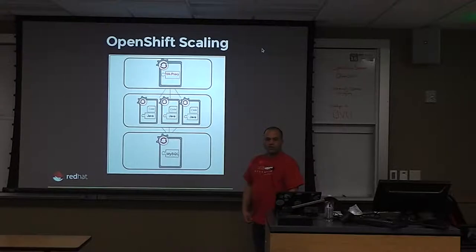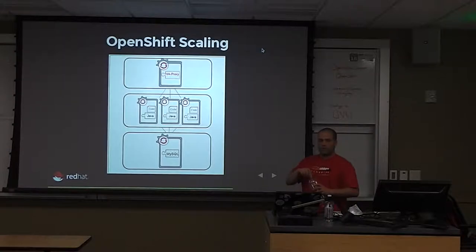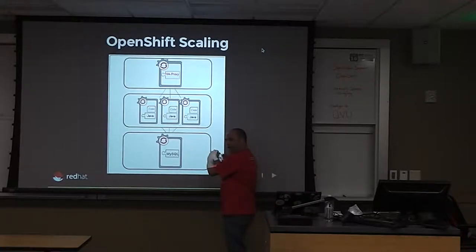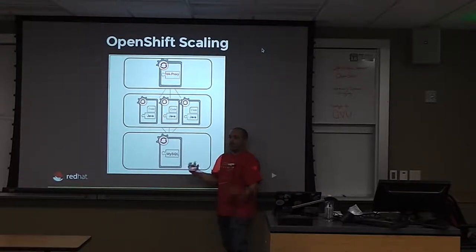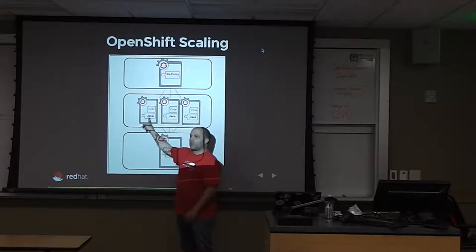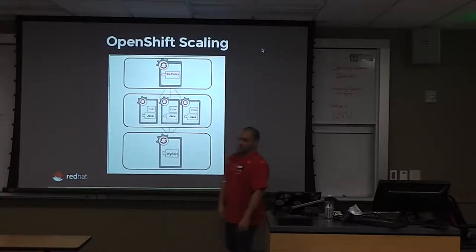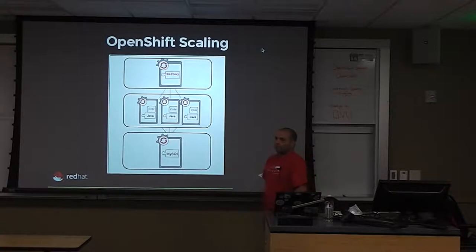One of the cool things we're working on — coming out soon — is the ability to set rules on your gear group about where to scale. You could scale out to the Ireland data center, plus Google Compute, plus OpenStack. For the enterprise product, you can bring this whole thing in-house and do cloud bursting: start up internally on your own infrastructure, but if load exceeds a threshold, burst the rest to an Amazon VPC.